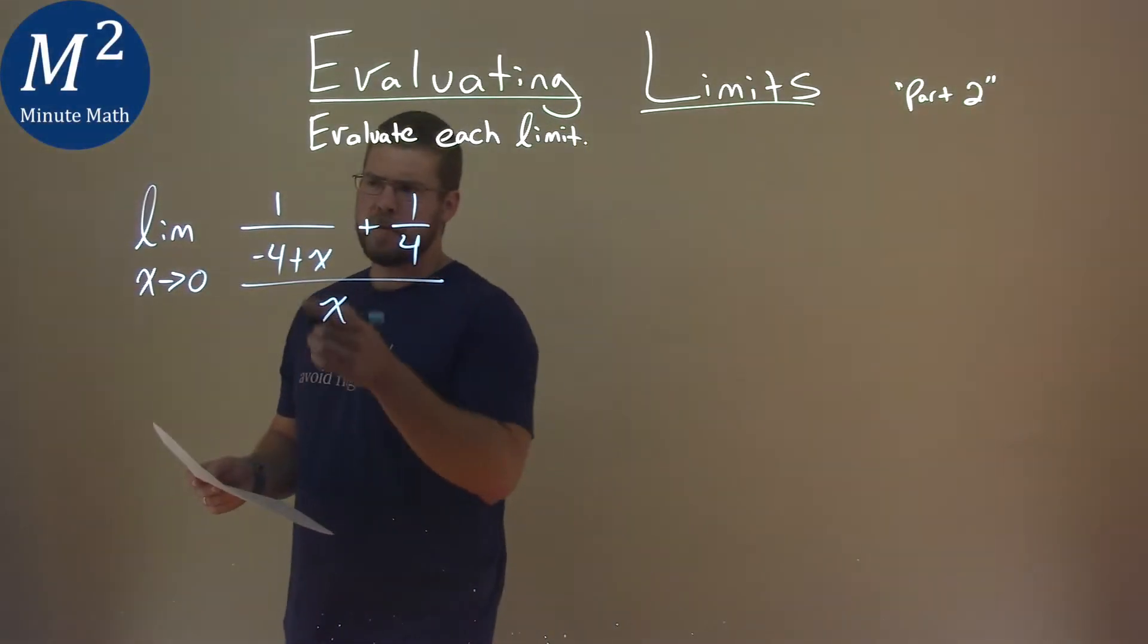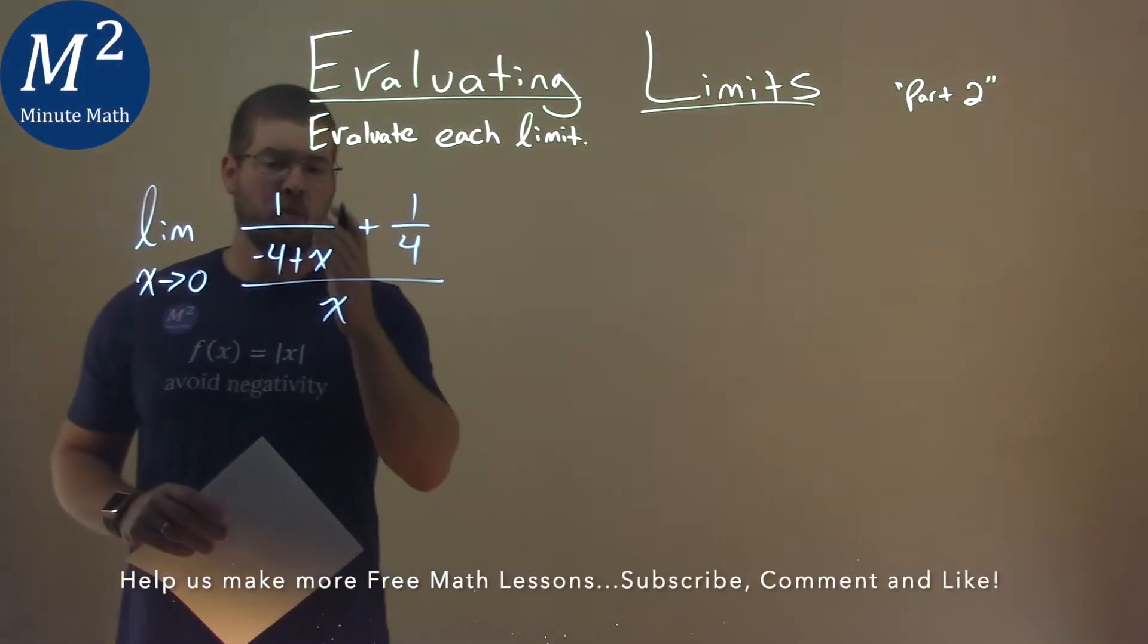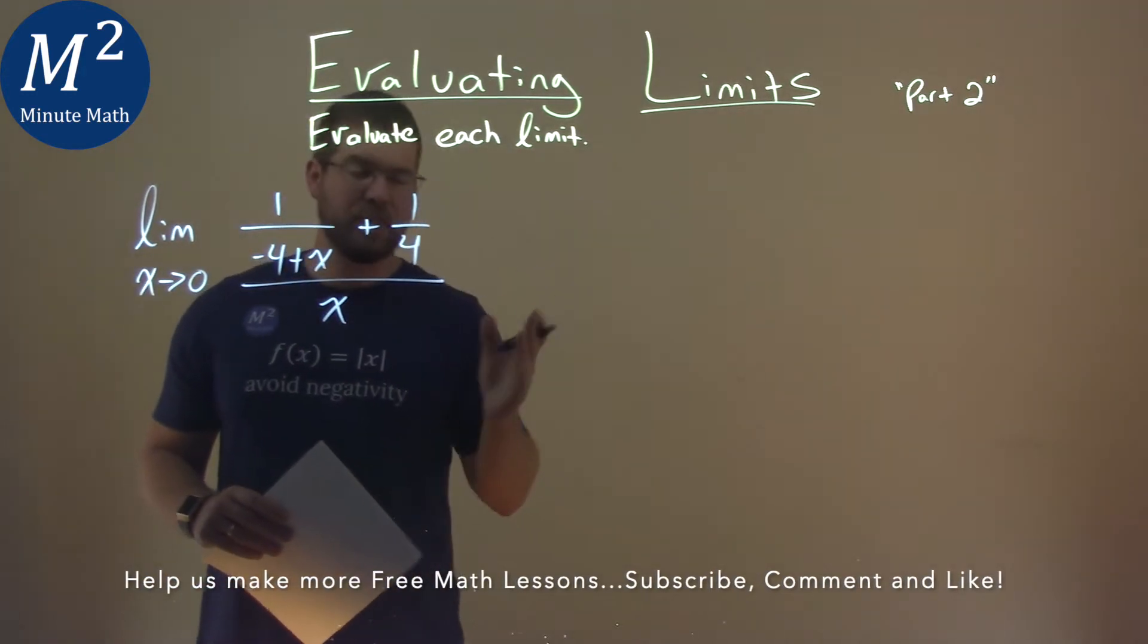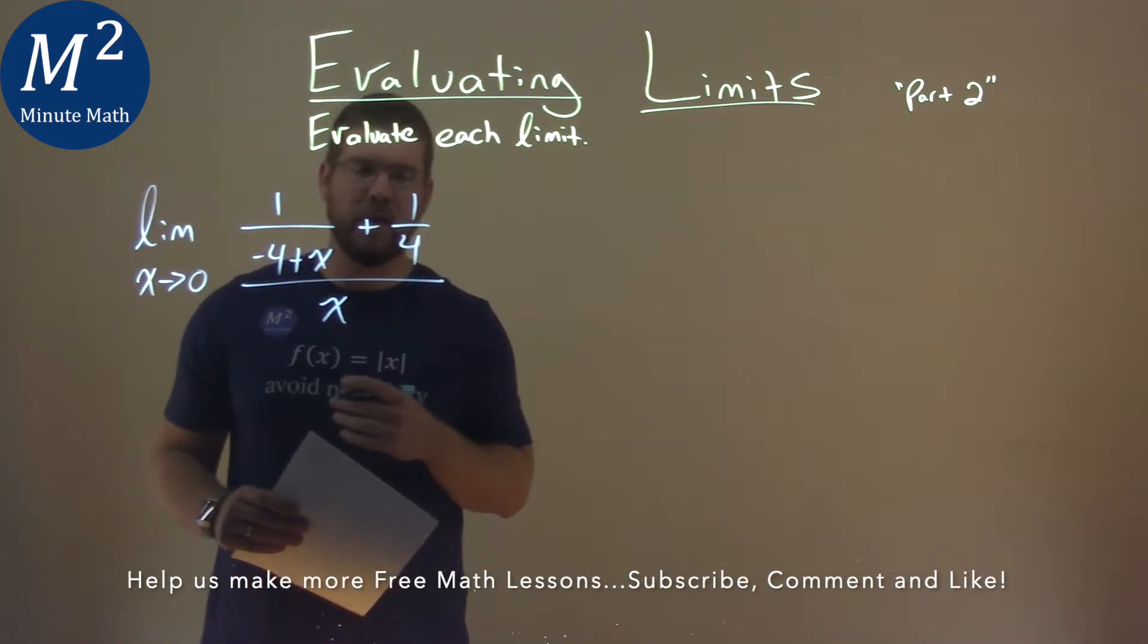We're given this limit right here. The limit as x approaches 0 of 1 over negative 4 plus x plus 1 fourth all over x. I'm going to evaluate this limit.